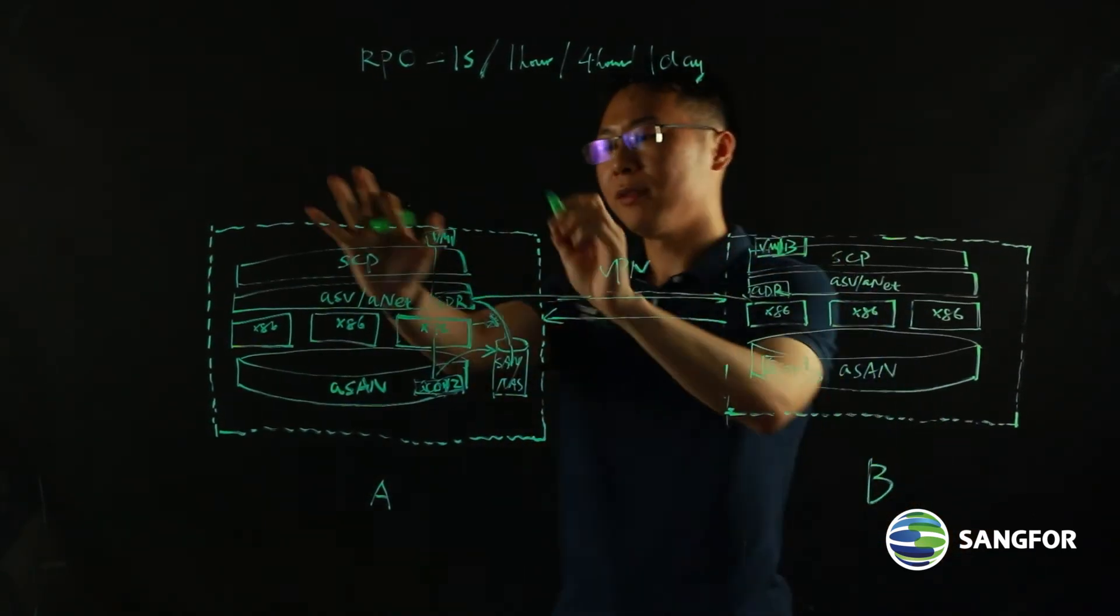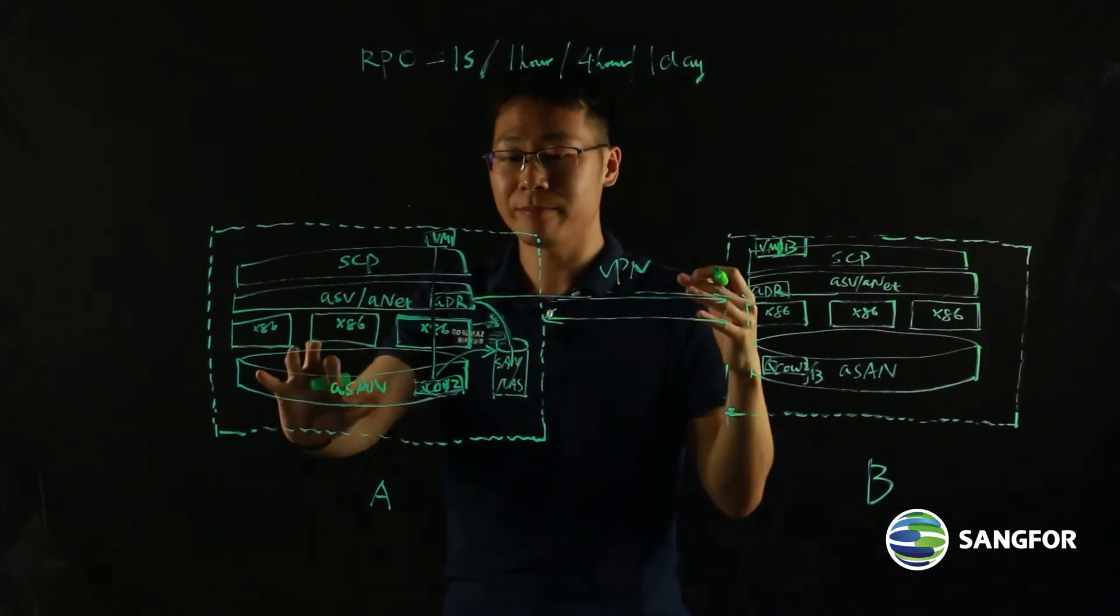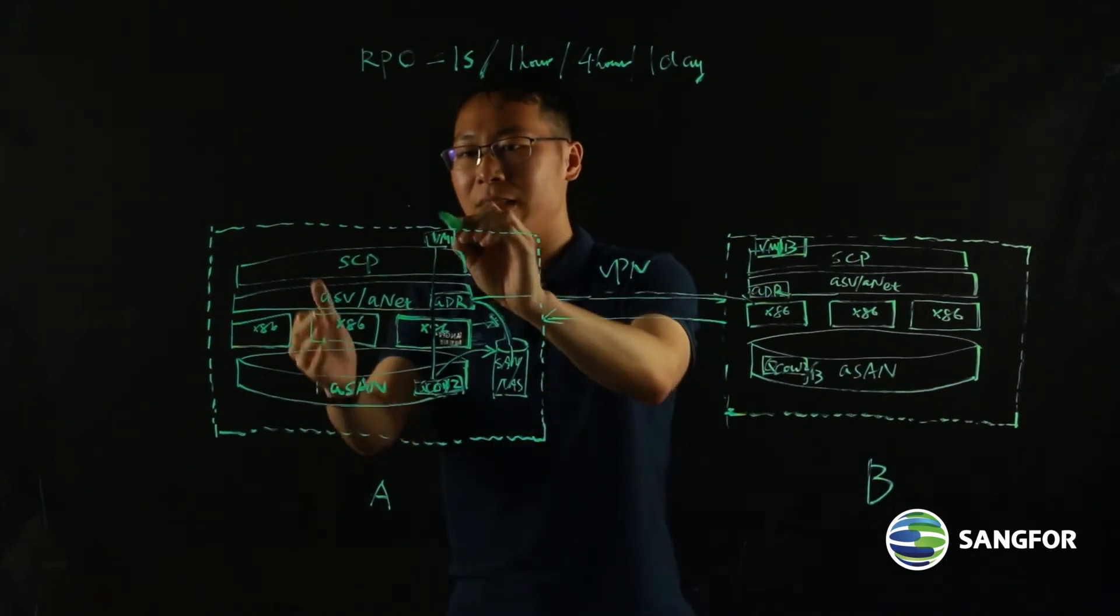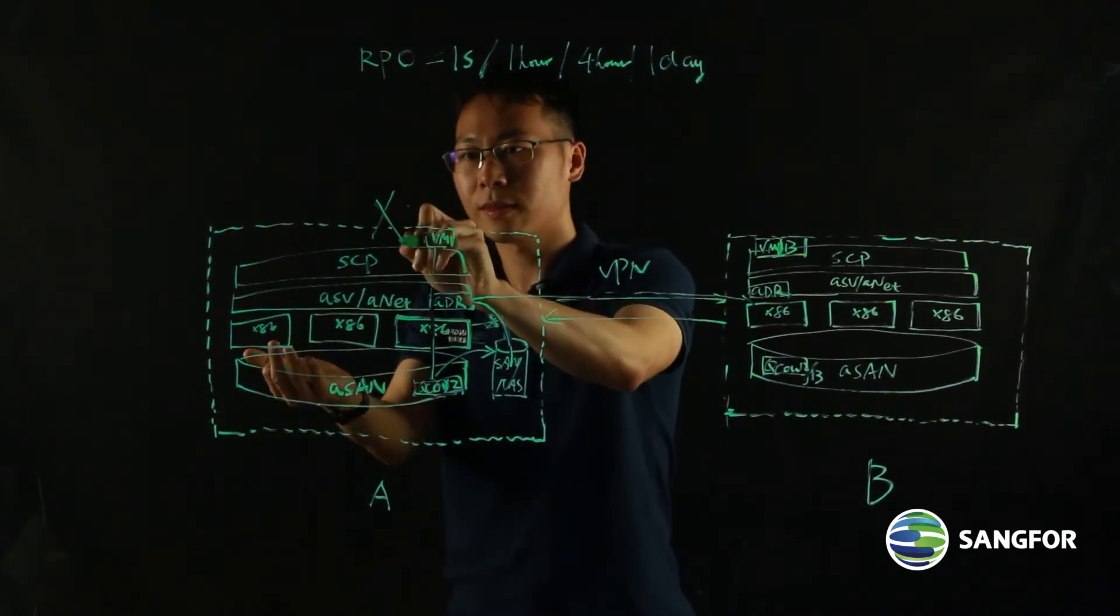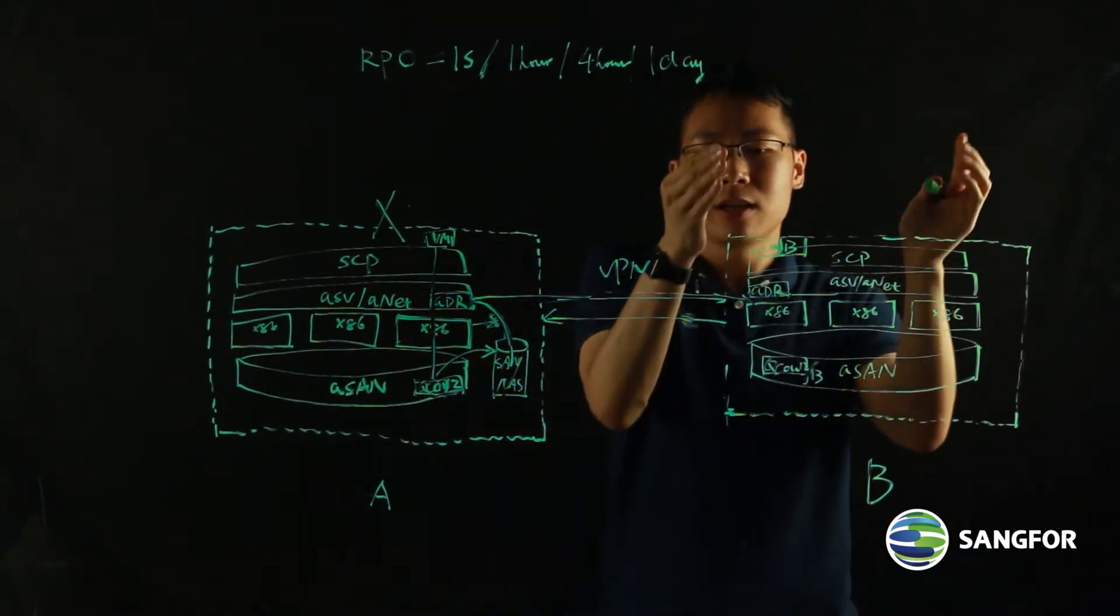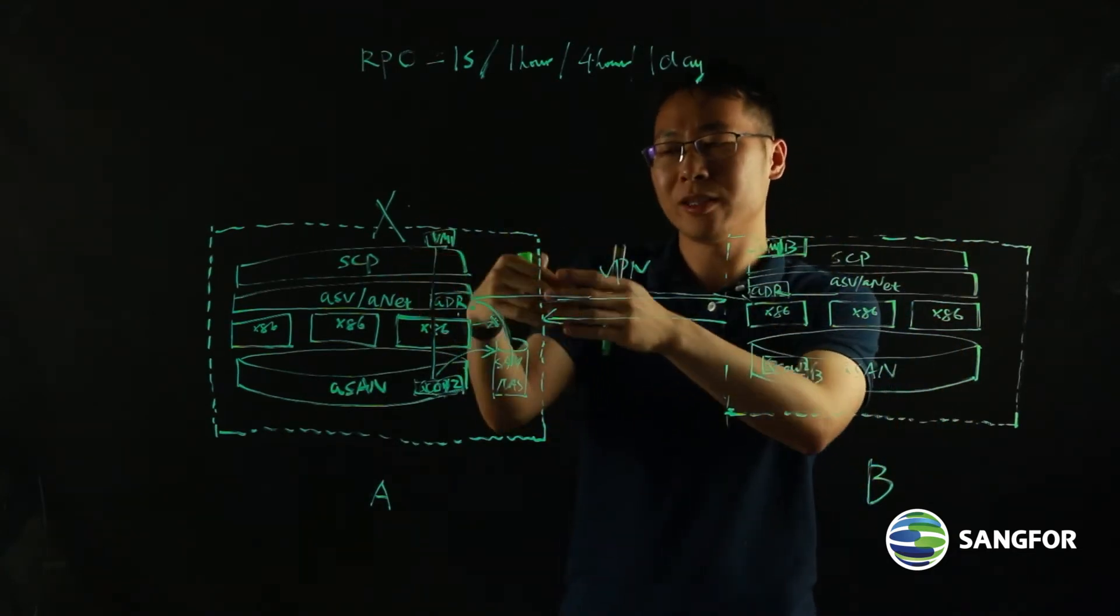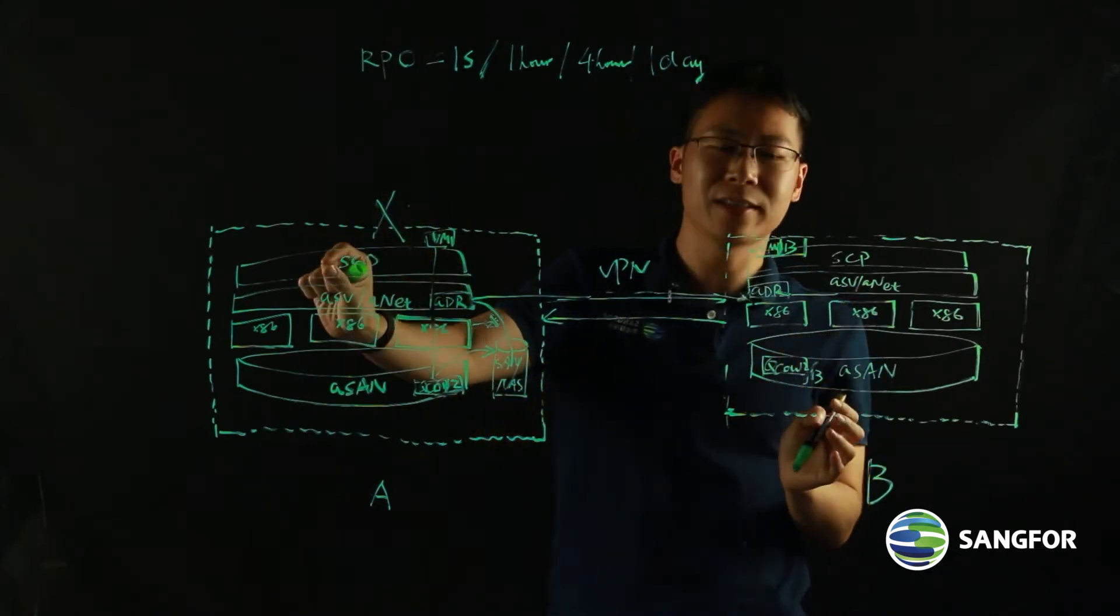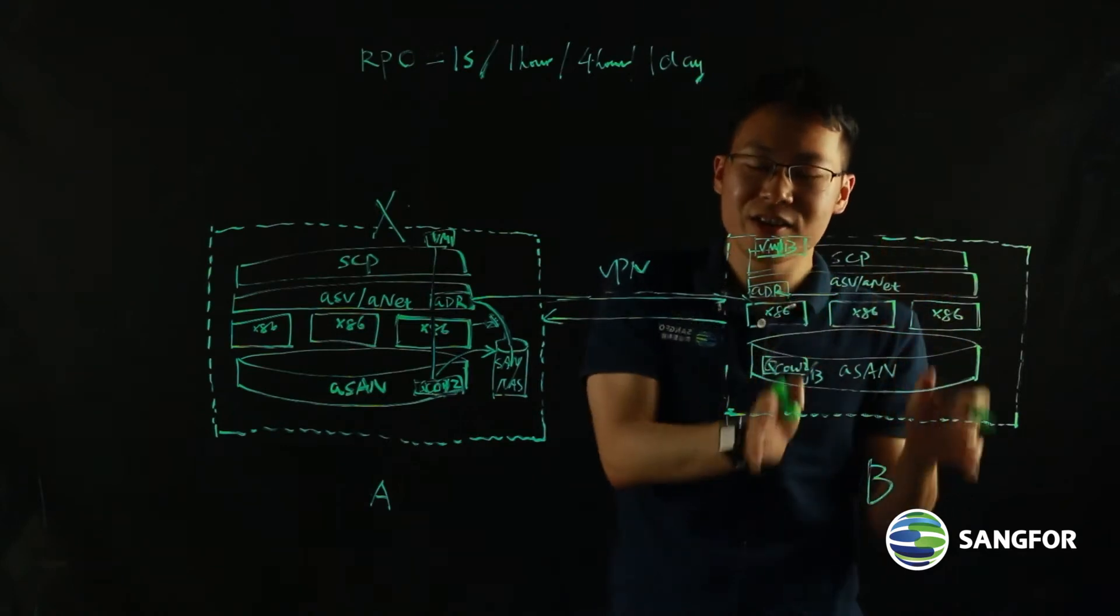So what if this primary site goes down? Let's say something bad, something unexpected hit this primary site and the power is failed. This site goes down. What we can do is, because the SCP, we keep syncing the information, I mean the environment information of the cluster from the primary SCP, I can cut over to the SCP here at the secondary site. I can log in to the SCP here.